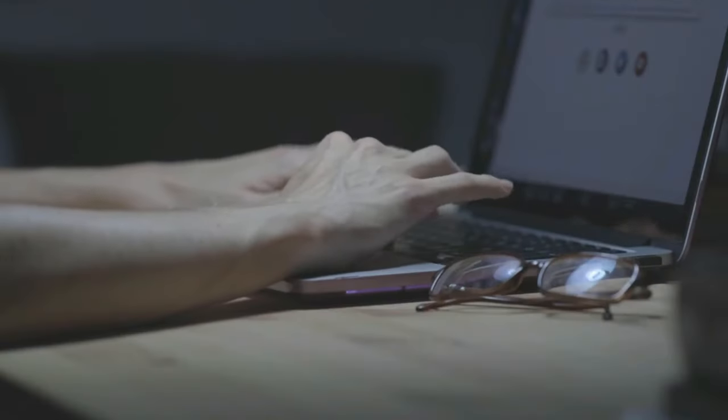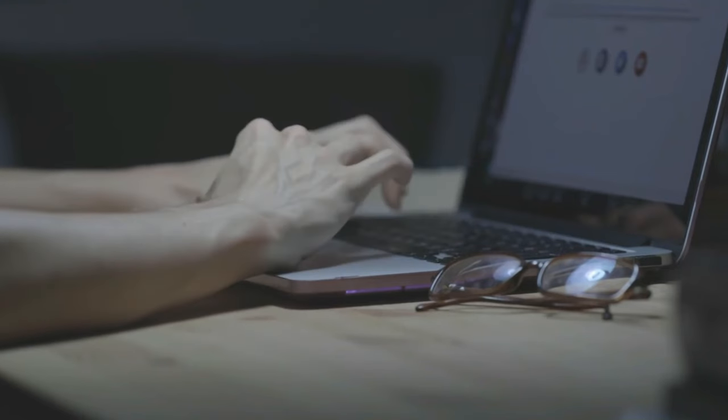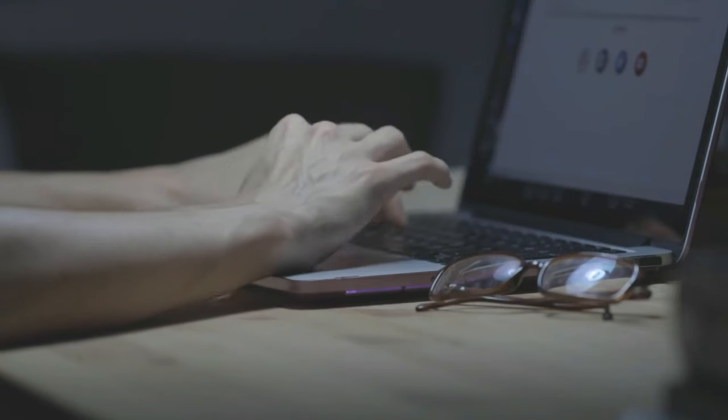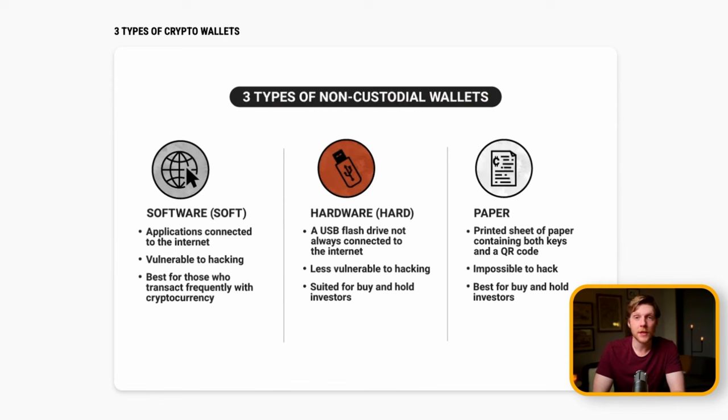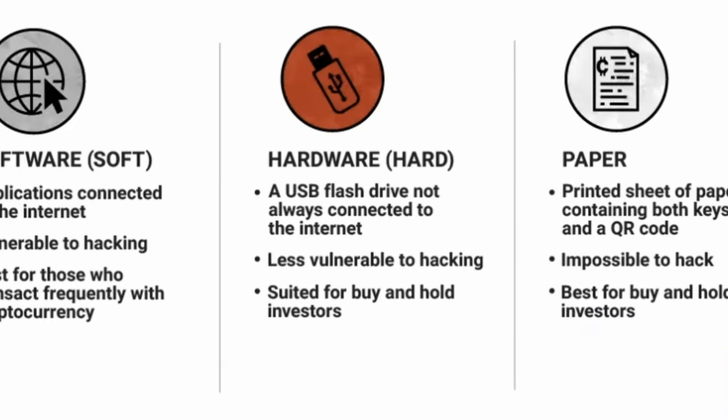The downside of a custodial wallet like Coinbase is that they have your private key — so in a way they kind of own your Bitcoin — and they also have your identity. You're relying on Coinbase to be secure with your information; if they have a leak or get hacked, you could lose all the privacy you worked to achieve. The best answer is probably an anonymous, non-custodial wallet. You can store your private key on a hard drive — not vulnerable to a leak or hack, and you don't have to type your key every time, just plug in the drive.